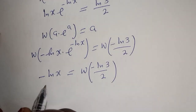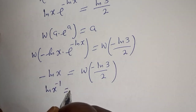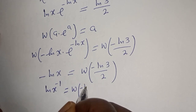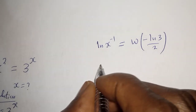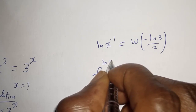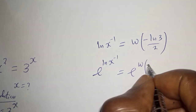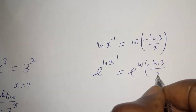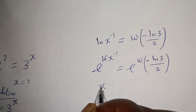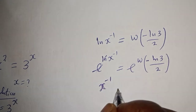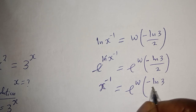Then this can be written as: ln of s raised to power negative 1 is equal to W of negative ln of 3 over 2. Therefore s raised to power W of negative ln of s is equal to e raised to power W of negative ln of 3 over 2. This is the final answer.